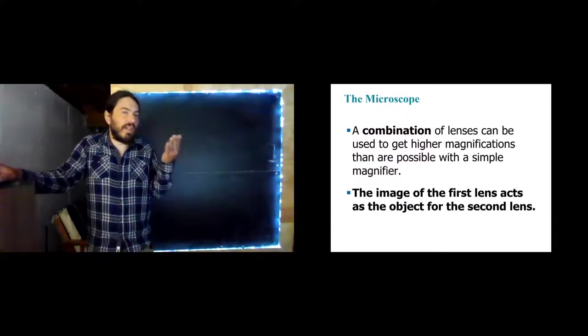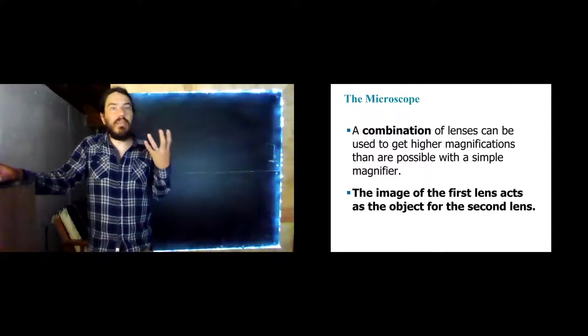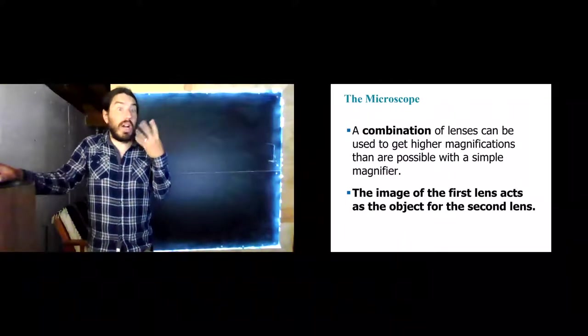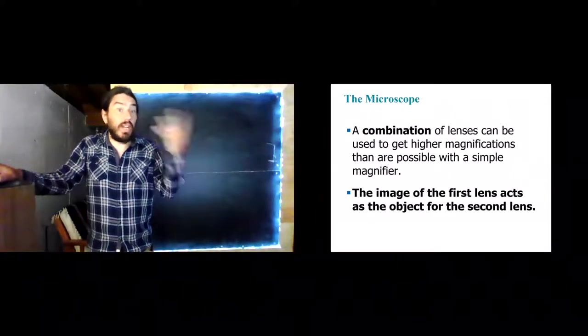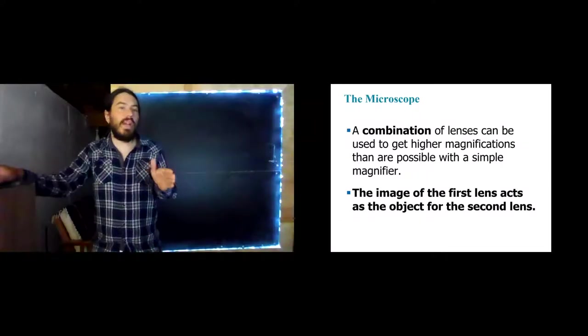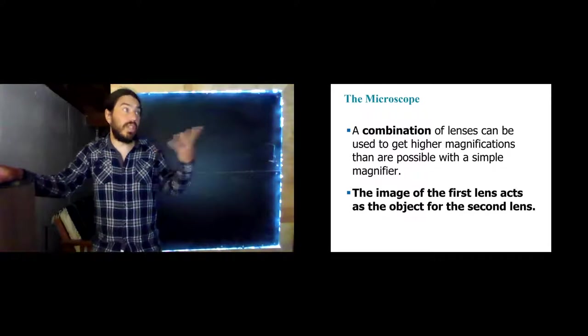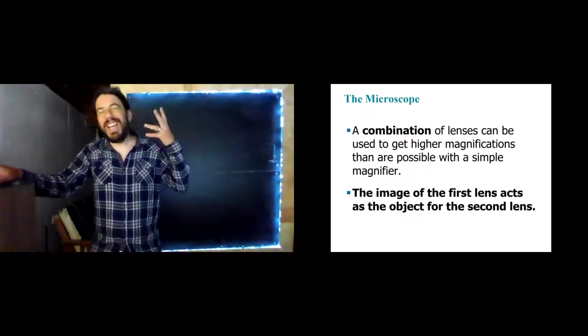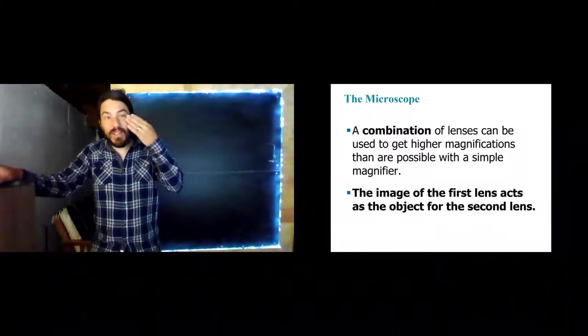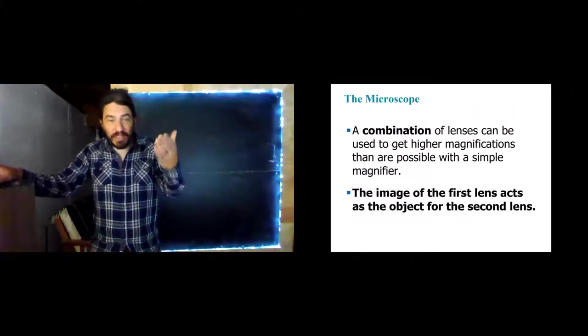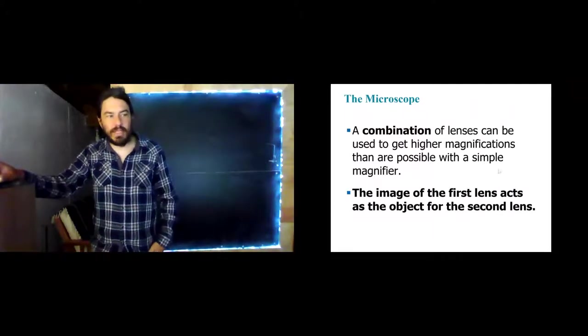We talked about how corrective lenses create an image, which then your eyeball is within the range of where your eyeball can focus on. So one way to wrap our brains around the way corrective lenses work is they form an image of the object we're trying to see. And that image becomes the object for our eyeball cornea system. So we kind of already talked about that a little bit.